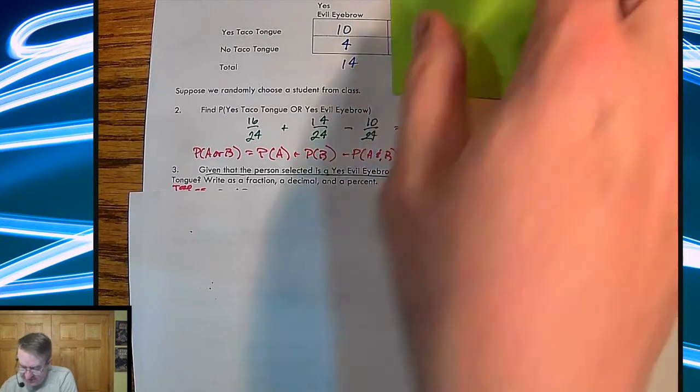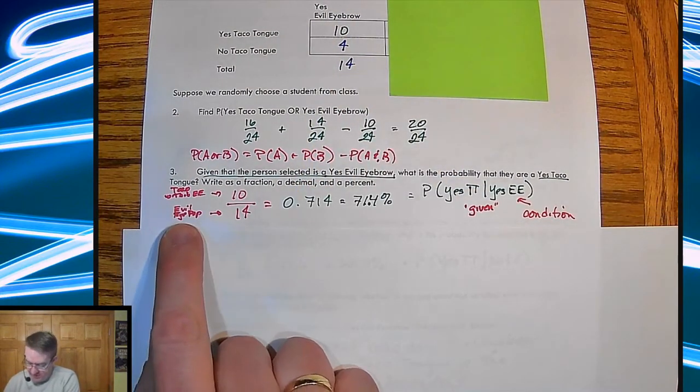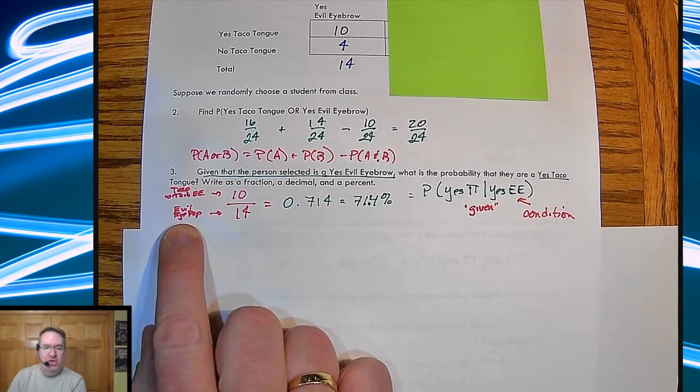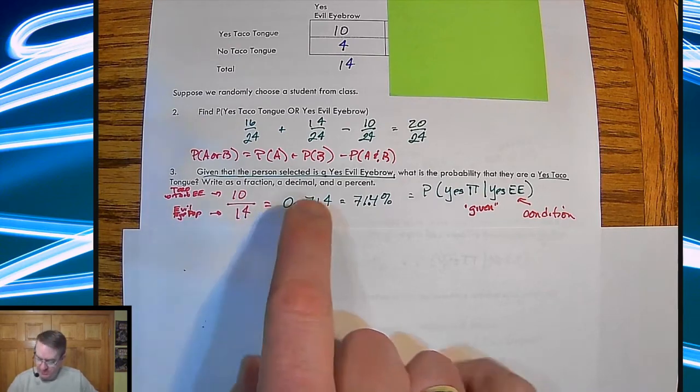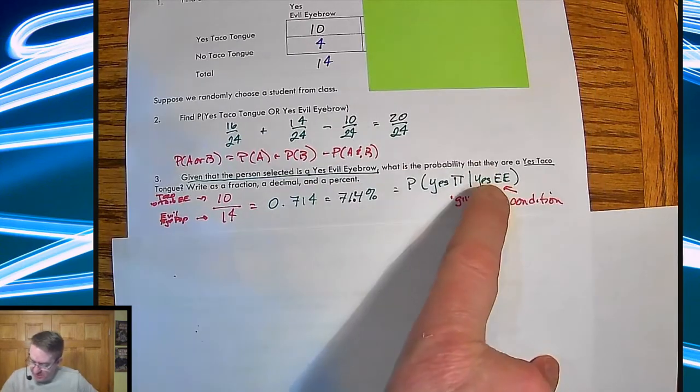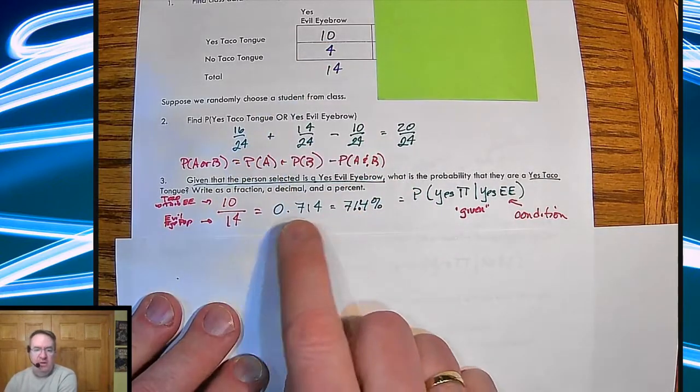And so because of that, our population effectively is now just the evil eyebrow people. So that's 14. How many of those people? Because we already know that's true. What's the probability that they are a yes, taco tongues? That's 10. So I get 10 out of 14.